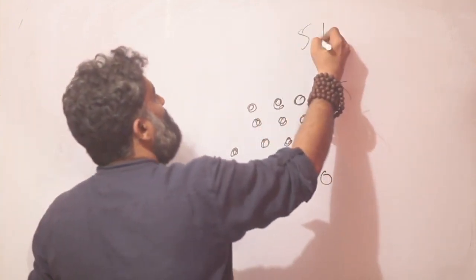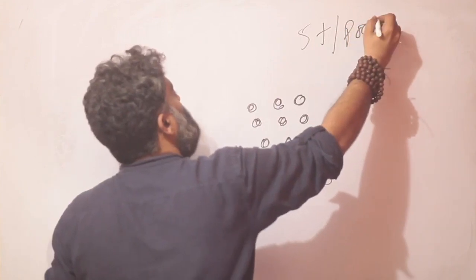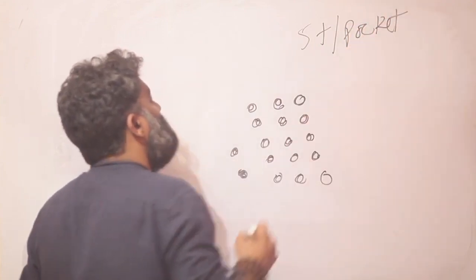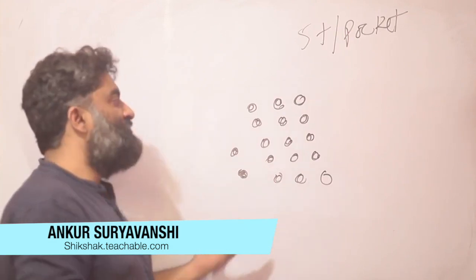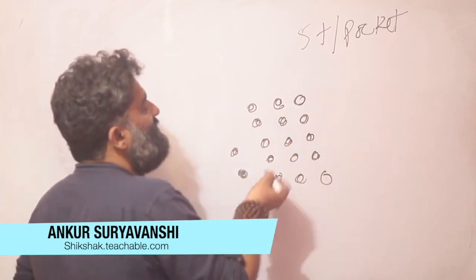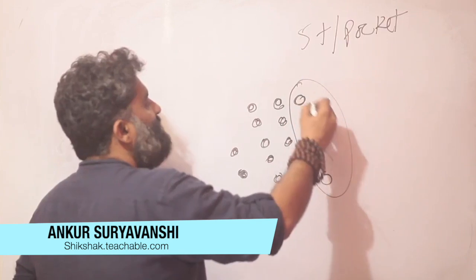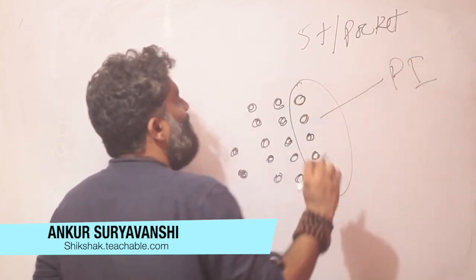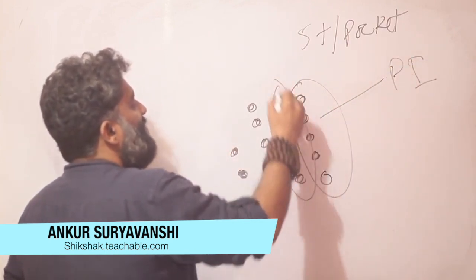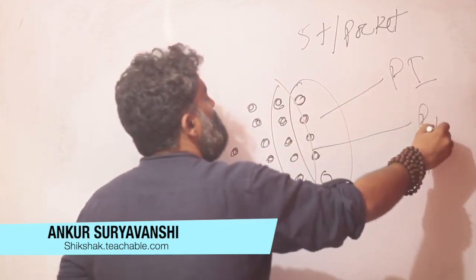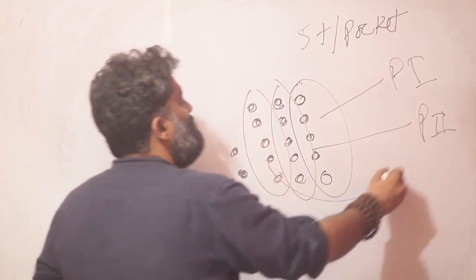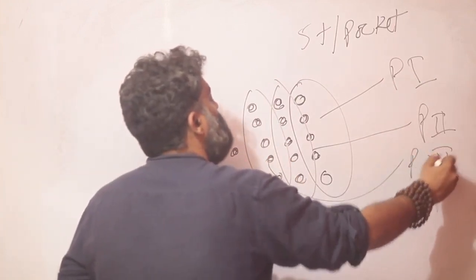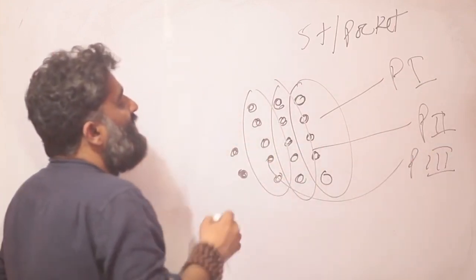So start counting. I can see there are 17 marbles. Take 5, put them in a packet, you get packet 1. Take the other 5 and put them in the other packet, you get packet 2. Again take 5 and put them in the third packet, you get packet 3.